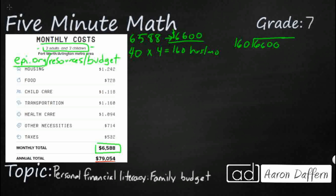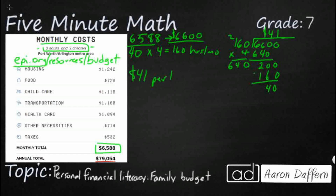Let's see — 40 goes into 160 and that gets me pretty close. So that gives me 640. Working through the division, it comes out to about $41. I did round up, so let's call it a little bit more than $40 — let's say $41 per hour. At $41 an hour you'll earn about $6,588 a month, which is right around what we need.